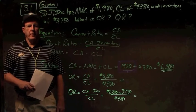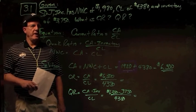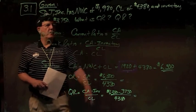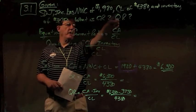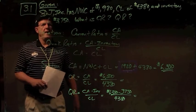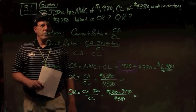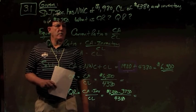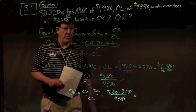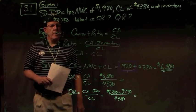In problem 3.1, we have SDJ Inc with networking capital of $1,920, current liabilities of $4,380, and inventory of $3,750. What is the current ratio? What is the quick ratio? A very simple problem here.